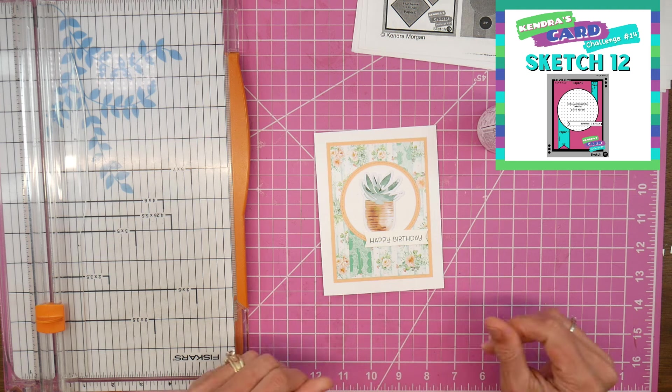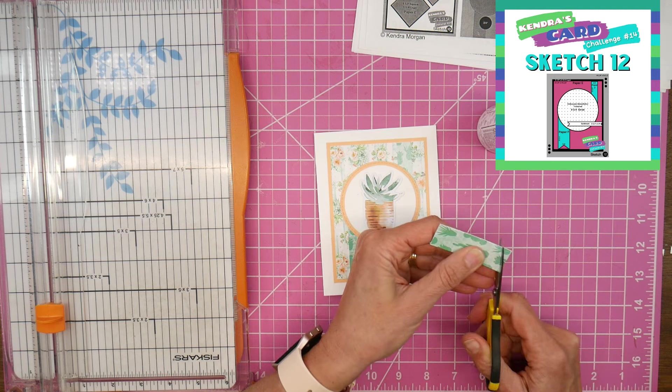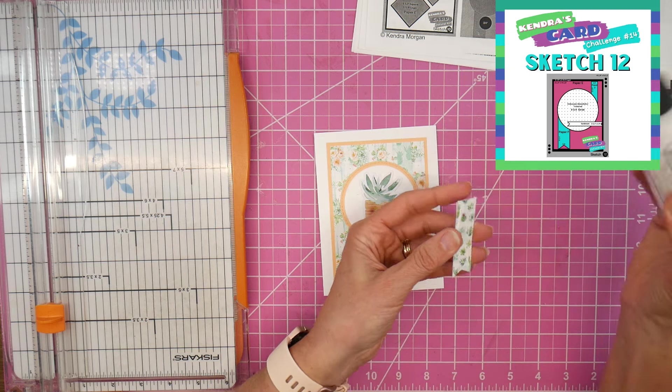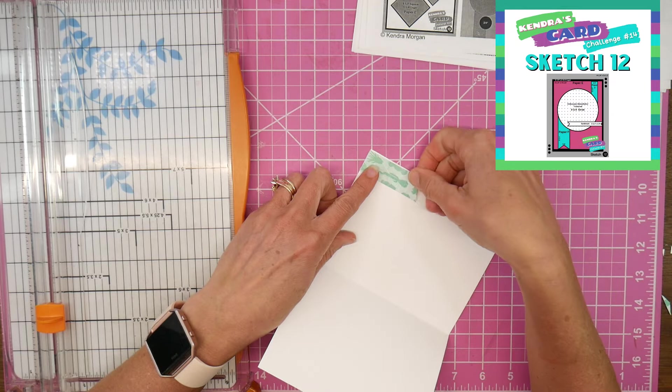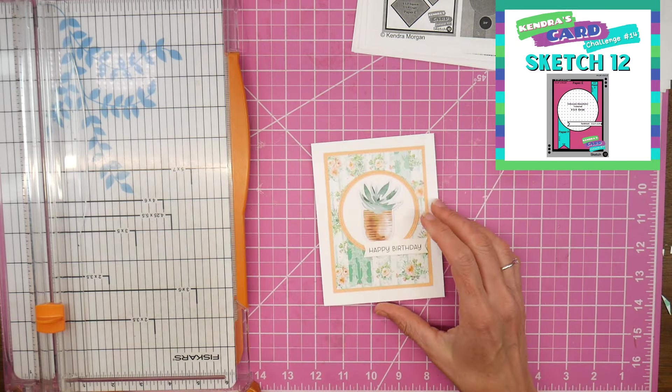Also something that I always like to do is add a little bit of something to the inside of the card. So I try to use some of the pattern paper scraps I have, and that helps not only pull the patterns from the front of the card to the inside, but it just adds a little bit of decoration to the inside and brings some color in there as well.